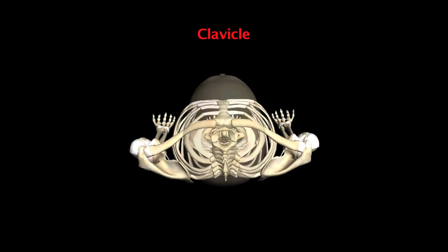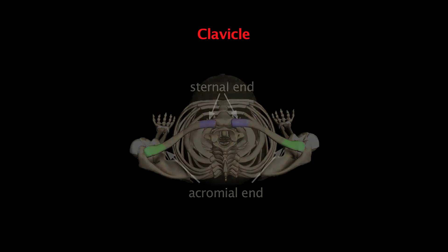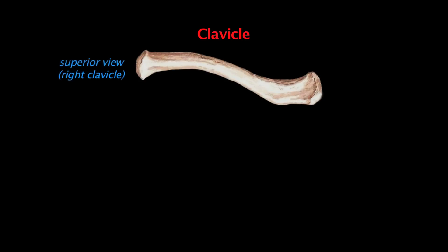The clavicle is commonly called the collarbone. It runs from the sternum out to the acromion process of the scapula, and the two ends are named to correspond. The end connected to the sternum is the sternal end, and the end connected out at the shoulder is the acromial end.